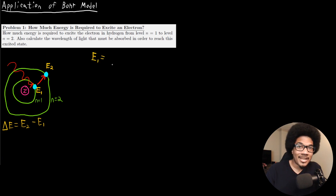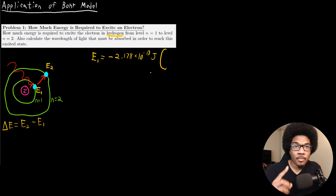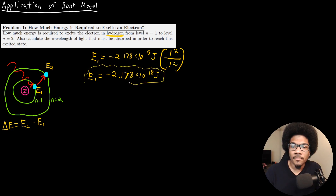For E1, we're going to use the Bohr model equation: negative 2.178 times 10 to the negative 18 joules. For Z in this case, they're telling us it's hydrogen, so the nucleus has a charge of positive one — the numerator is one squared. N in this case is one, so one squared in the denominator as well. Since everything is one, there's really no need to do much math here. The energy for the electron in the first energy level is negative 2.178 times 10 to the negative 18 joules.